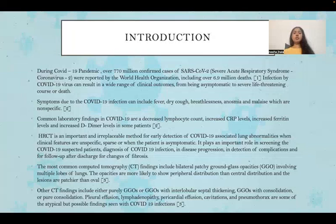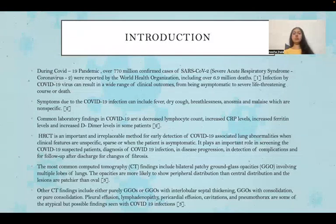The most common CT finding includes bilateral patchy ground glass opacities involving multiple lobes of the lung. These opacities are more likely to show peripheral distribution than central distribution and are more patchy than oval. Other CT findings can include GGOs with interlobular septal thickening, GGOs with consolidation, or pure consolidation.